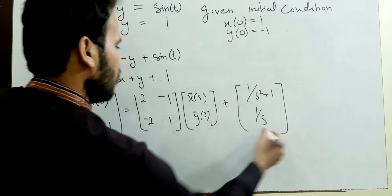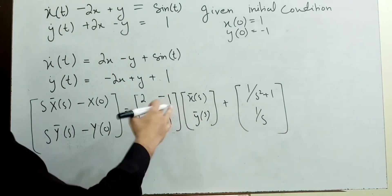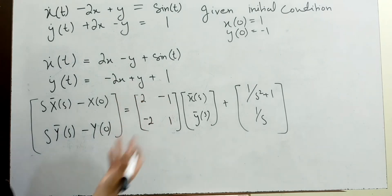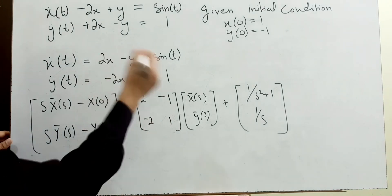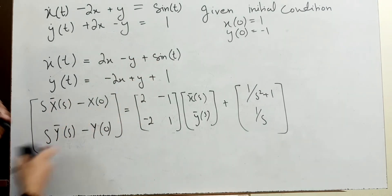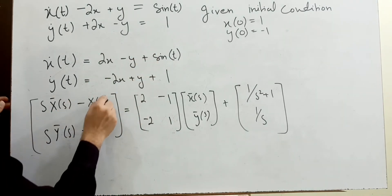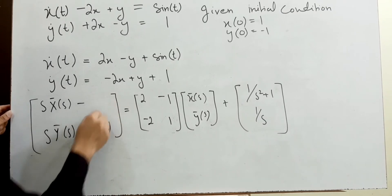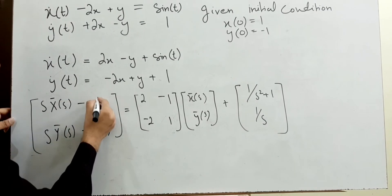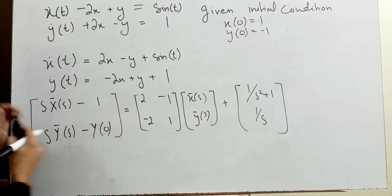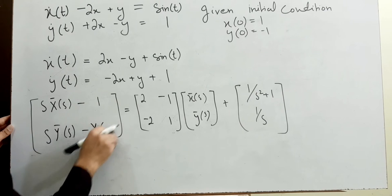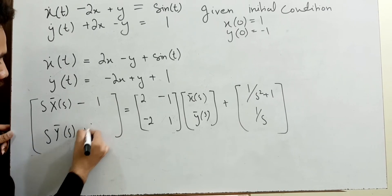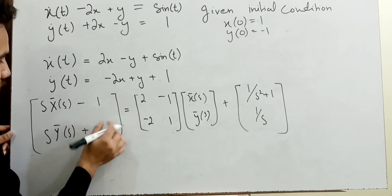Now we have to collect X̄(s) and Ȳ(s), then take the Laplace inverse. Using initial conditions x(0) = 1 and y(0) = -1, I can rewrite the initial condition terms as -1 and +1 respectively.